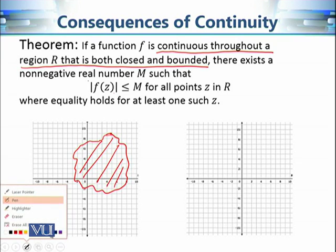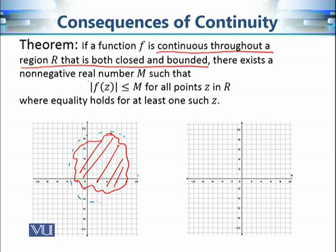Bounded means there will be a bigger circle and all of this region R is contained in that disk. However big the region R is, there is some disk containing it. If you don't remember, I would suggest going back to see what closed and bounded means from our earlier discussions. The consequence is that all functional values — the modulus of those values — is less than or equal to M, so all functional values will be bounded.